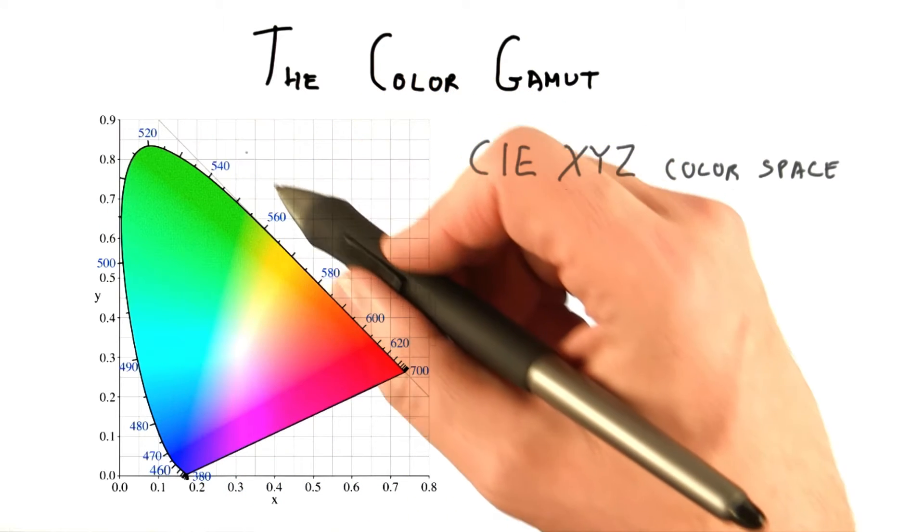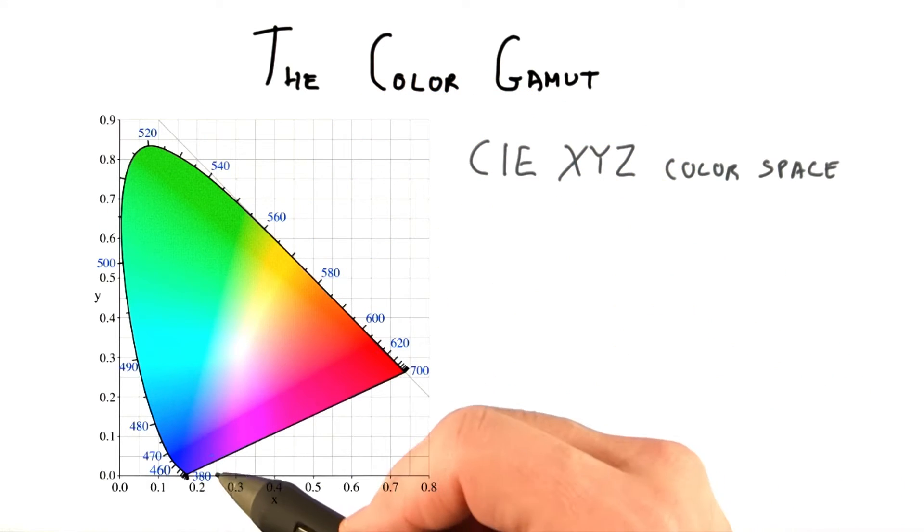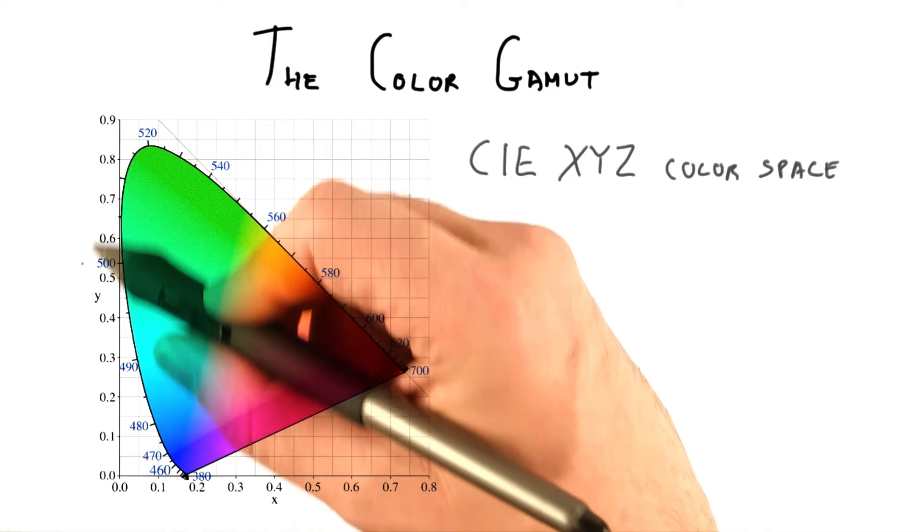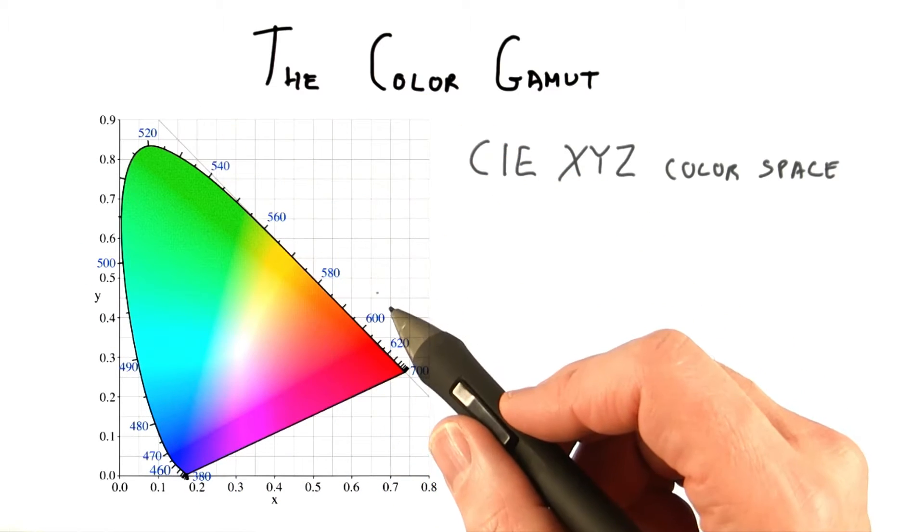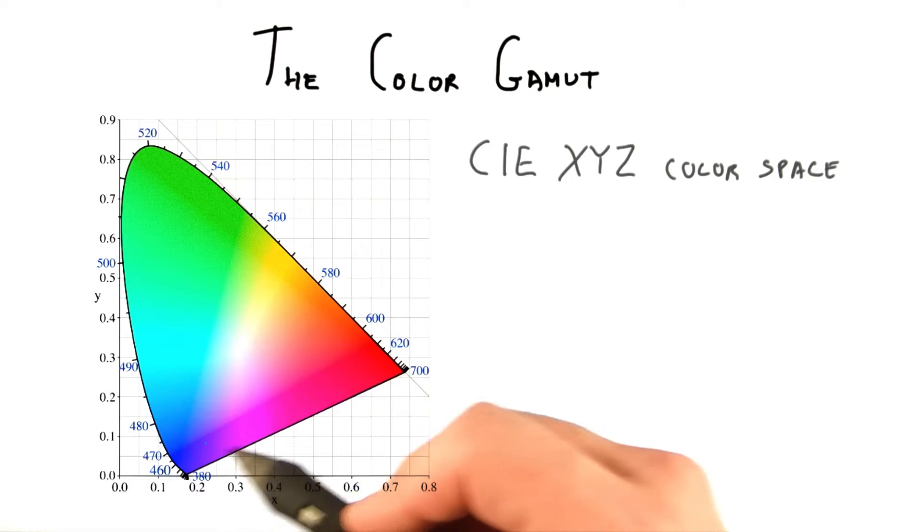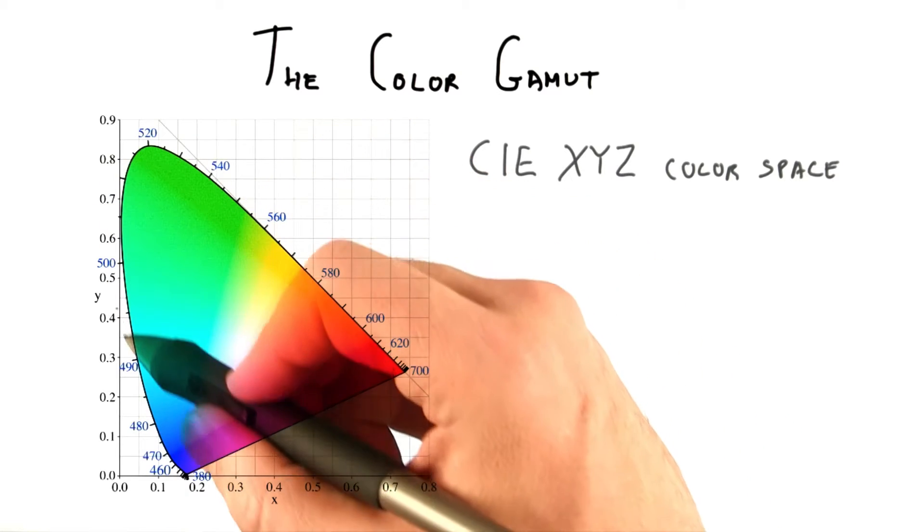Along this curved edge are the pure spectral colors. The values here are the wavelengths of light that produce various colors. You can in fact see the colors of the rainbow as you move along it: red, orange, yellow, green, blue, and so on.